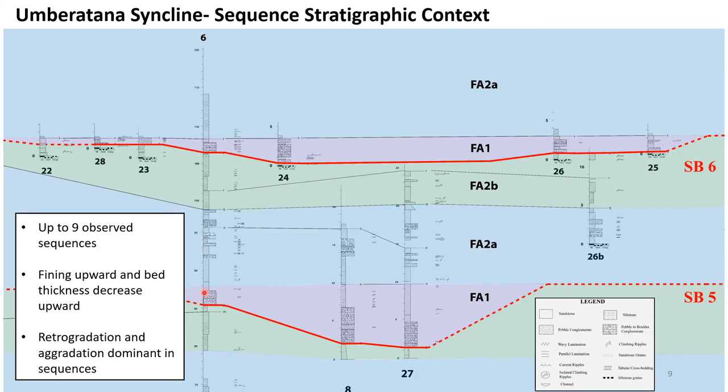After aligning the measured sections using the map surfaces, we were able to observe up to nine sequences that were unconformity-bounded and fine upward, with bed thickness decreasing upward within the three incisions. We established facies associations within each sequence, which allowed us to observe both retrogradational and aggradational stacking patterns dominant within the sequences.